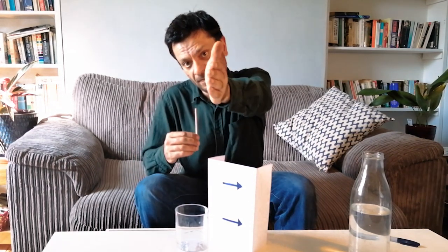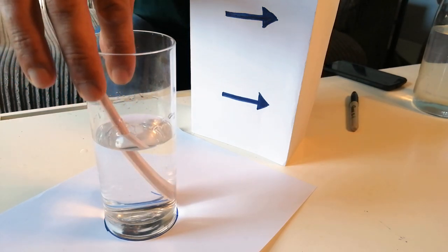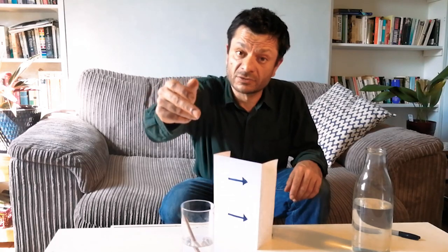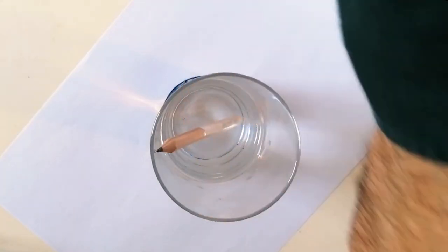Now if I put the pencil in the water you'll see that it looks bent because the light changes direction as it travels from the water to the air. A similar thing happens in the reversing arrow trick.